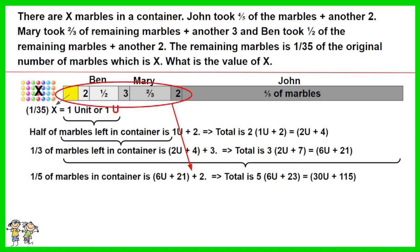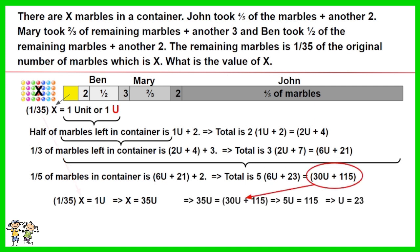Given total marbles as X = 35U, thus 35U = 30U + 115. 5U is then equal to 115, so 1U is therefore equal to 23.